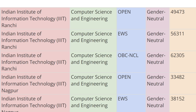Moving ahead, we have IIIT Ranchi. For Open category the cutoff rank is 49,473, for EWS category for Computer Science the cutoff rank is 56,311, and for OBC-CL category the cutoff rank is 62,305.